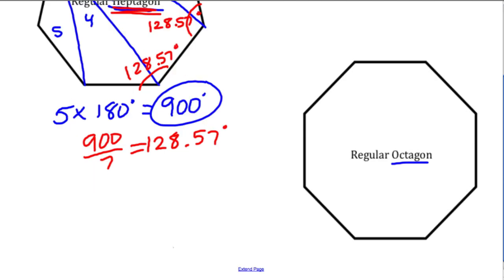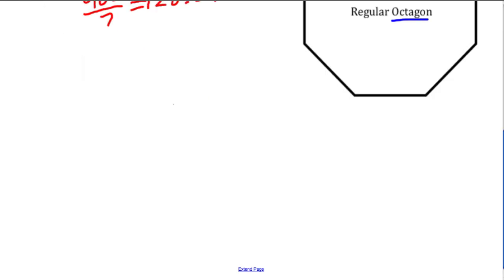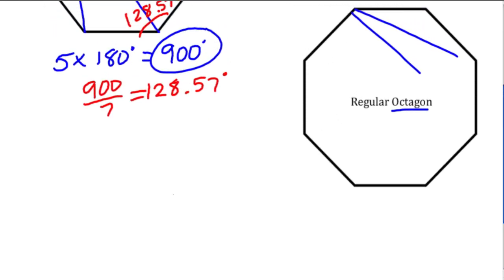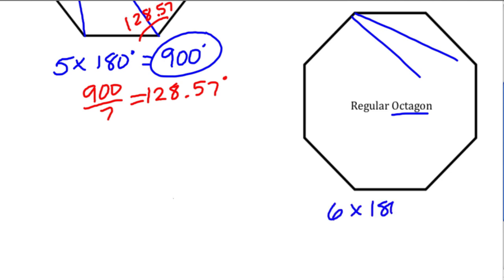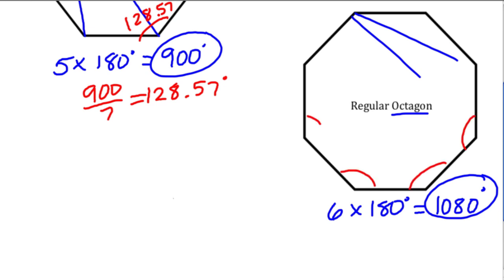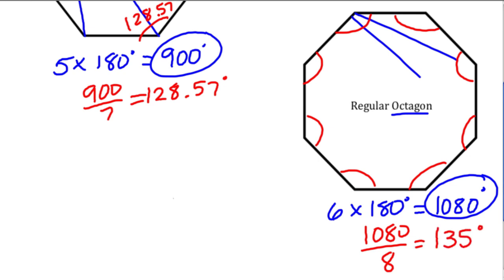An octagon has eight sides and six triangles. Six times 180 degrees is 1080 degrees — that's what all the interior angles add up to. To find the measurement of each angle, an octagon has eight sides and eight angles, so we take 1080 divided by eight, which is 135 degrees. Each interior angle of a regular octagon is 135 degrees.